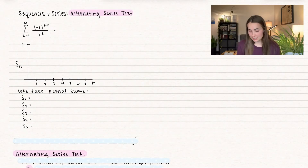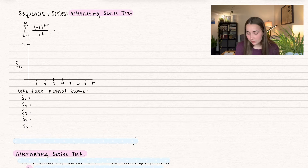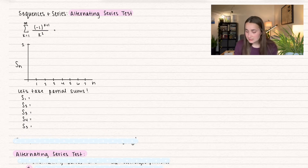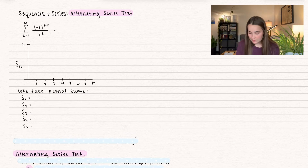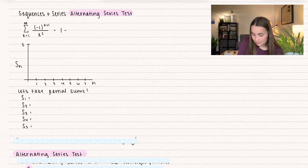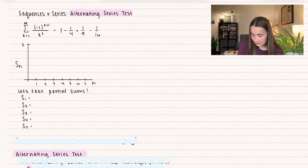We're going to start off with a series: the sum from k equals 1 to infinity of negative 1 to the k plus 1, divided by k squared. When we plug in 1 we get negative 1 to the power 2, that's going to be positive, so here we just get a 1.